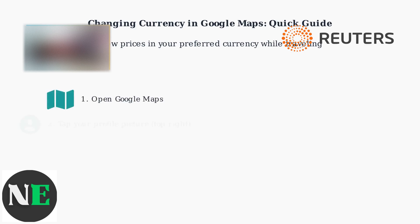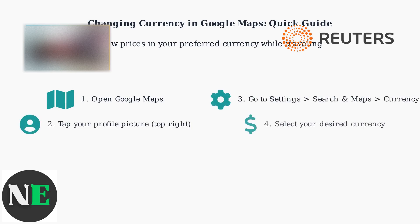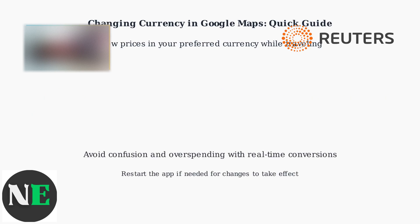To change it, open Google Maps, tap your profile picture, go to Settings > Search and Maps > Currency, and select your desired currency. Restart the app if needed.